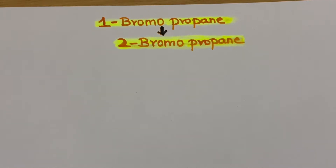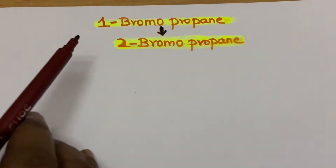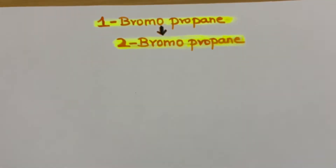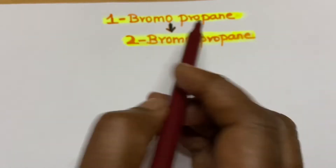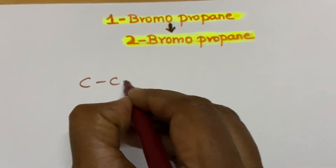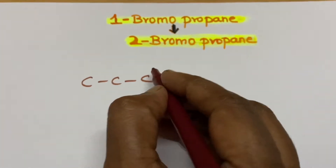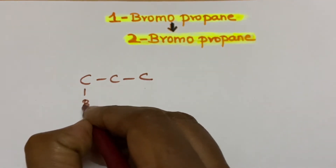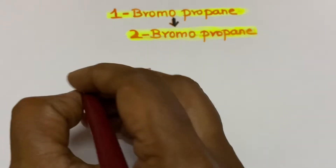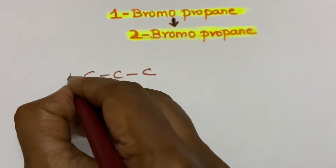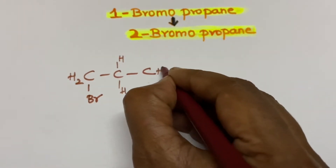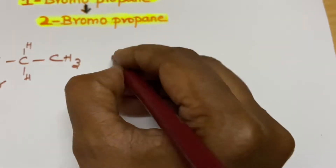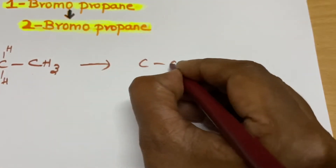In today's class I am going to teach you the conversion of 1-bromopropane to 2-bromopropane. Propane means there will be three carbons, and in the one position there will be a bromine. The rest of the valency you have to satisfy with hydrogen. This is your 1-bromopropane.